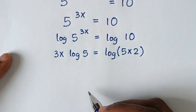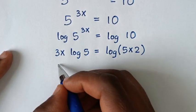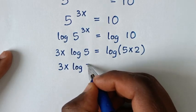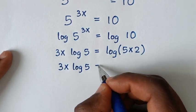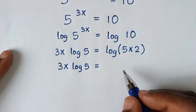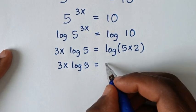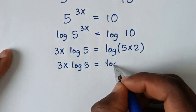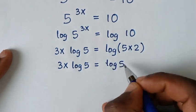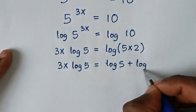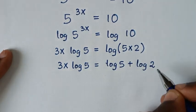Then in the next step it will be 3x times log of 5 is equal to log of 5 times 2, which is the same as log of 5 plus log of 2.